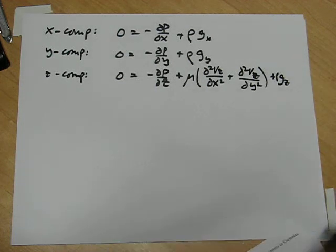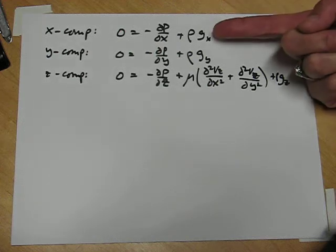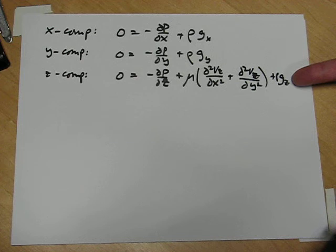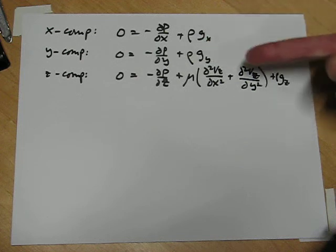So just by saying steady state flow only in the z direction of an incompressible fluid, we've already simplified our problem considerably. The next step will be to write the gravity vector in our coordinate system so we can simplify these terms.